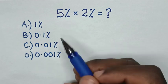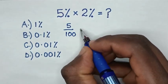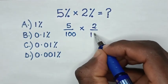So first you convert this 5% into fraction, so it will be 5 over 100, then times 2% into fraction is 2 over 100.